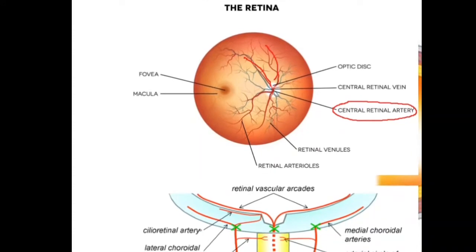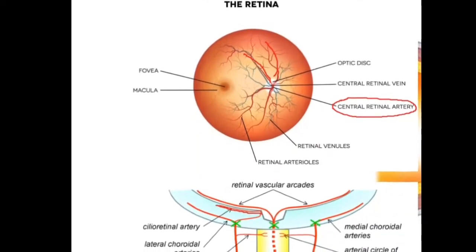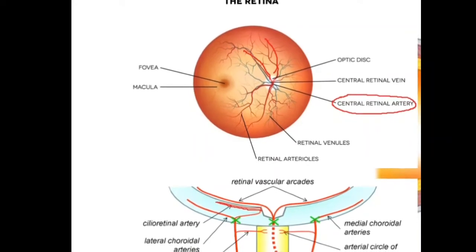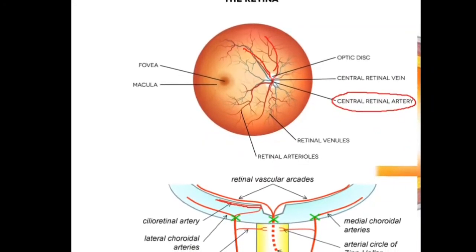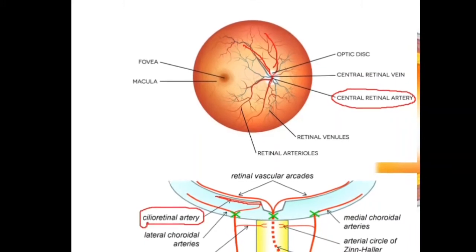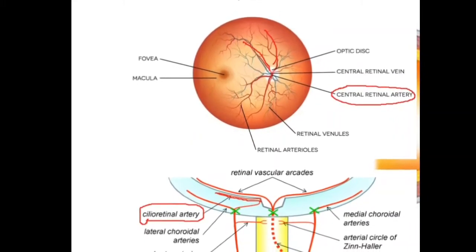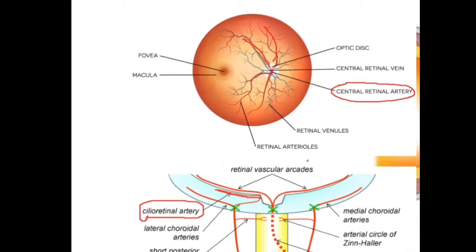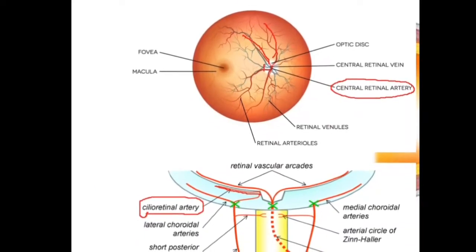Another artery is the cilio-retinal artery, which is a branch or continuation of the long posterior ciliary artery. This is seen in certain people, not in all. Any blockage in these three arteries — central retinal artery, branch retinal arteries, and cilio-retinal artery — causes retinal artery occlusion.